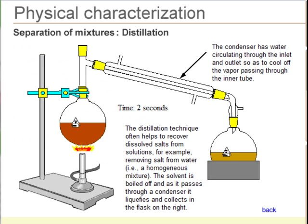Distillation is a method where a liquid is separated from other liquids of higher boiling point or from solids dissolved in the liquid. The lower boiling point liquid is boiled off, and the vapor is cooled in a condenser and collected in another container.